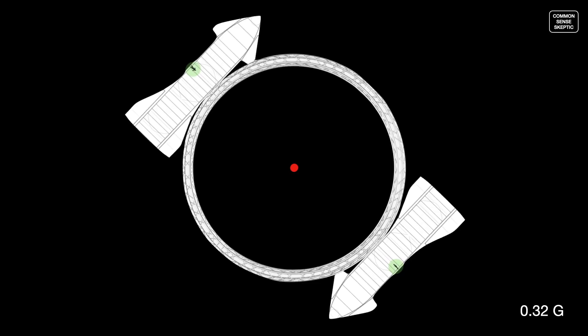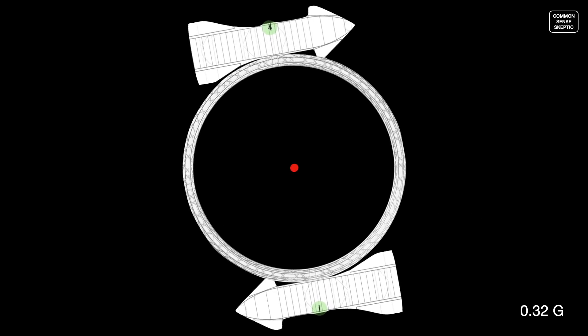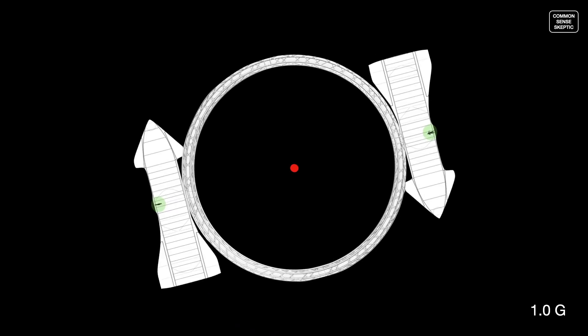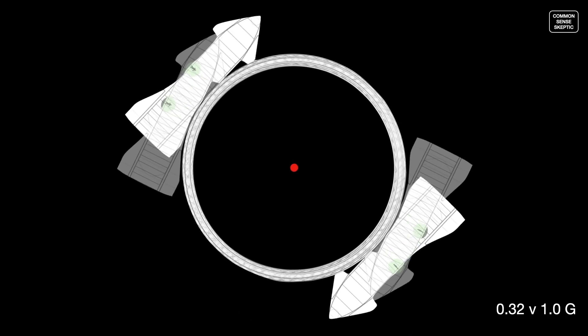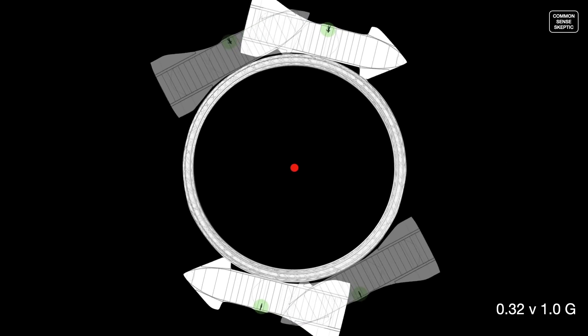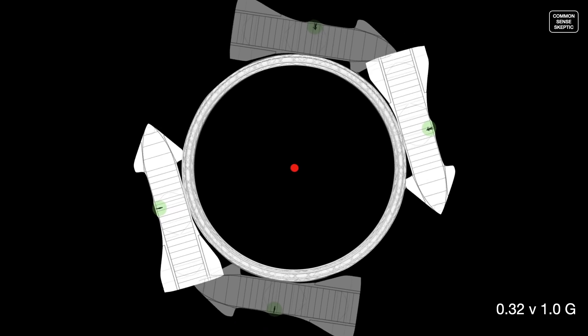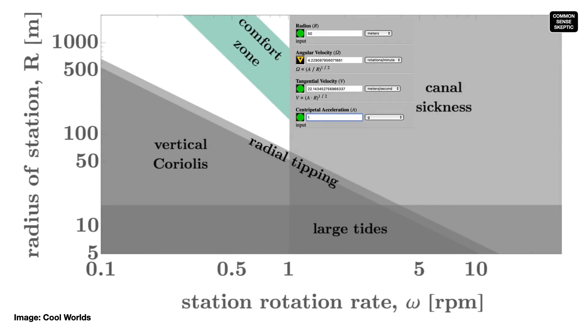With this radius, the rate of rotation for Martian gravity would look like this. The rate of rotation for Earth gravity would look like this. And the two rotational rates overlaid would look like this. And here is where that system lands on our graph of discomforts.